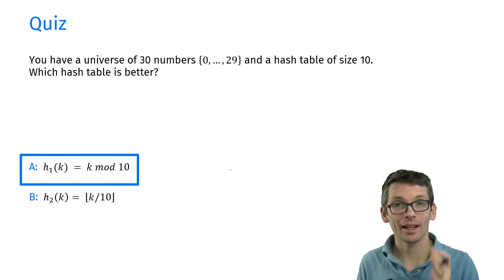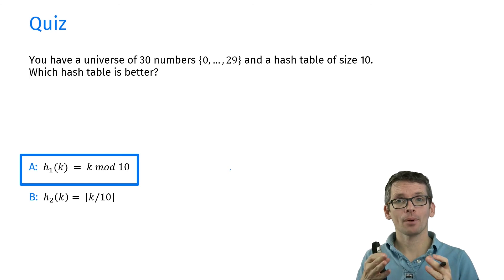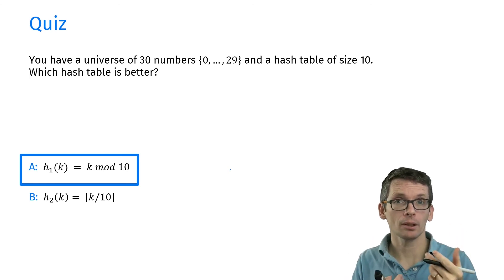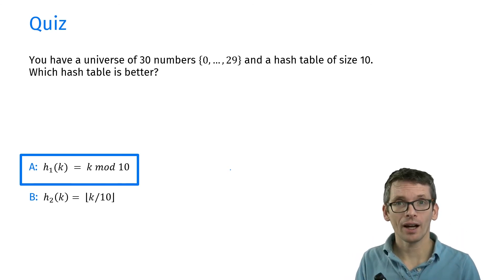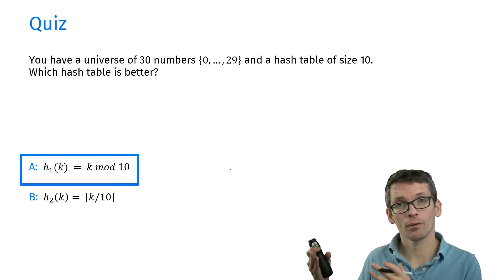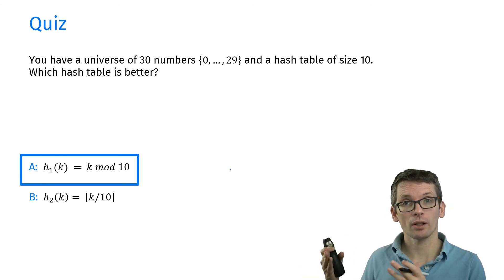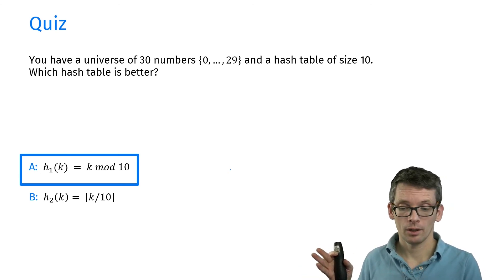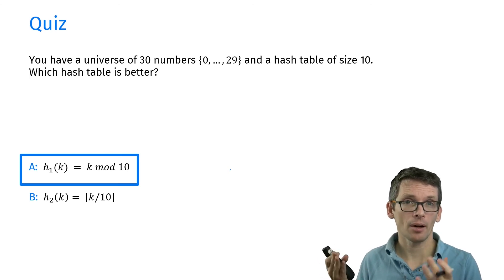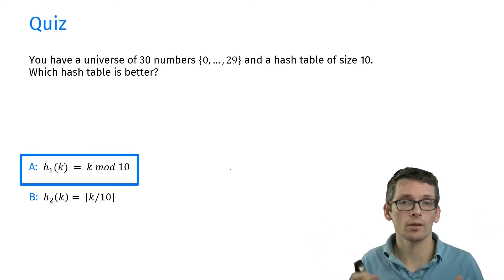The correct answer is A, h1 being k mod 10, because in this way I map to every slot exactly three numbers. k divided by 10 actually maps everything to the first three slots—0, 1, and 2. So that's a bad choice. Better than that would have been k divided by 3. That would have nicely distributed the numbers again, but that was not an option here.